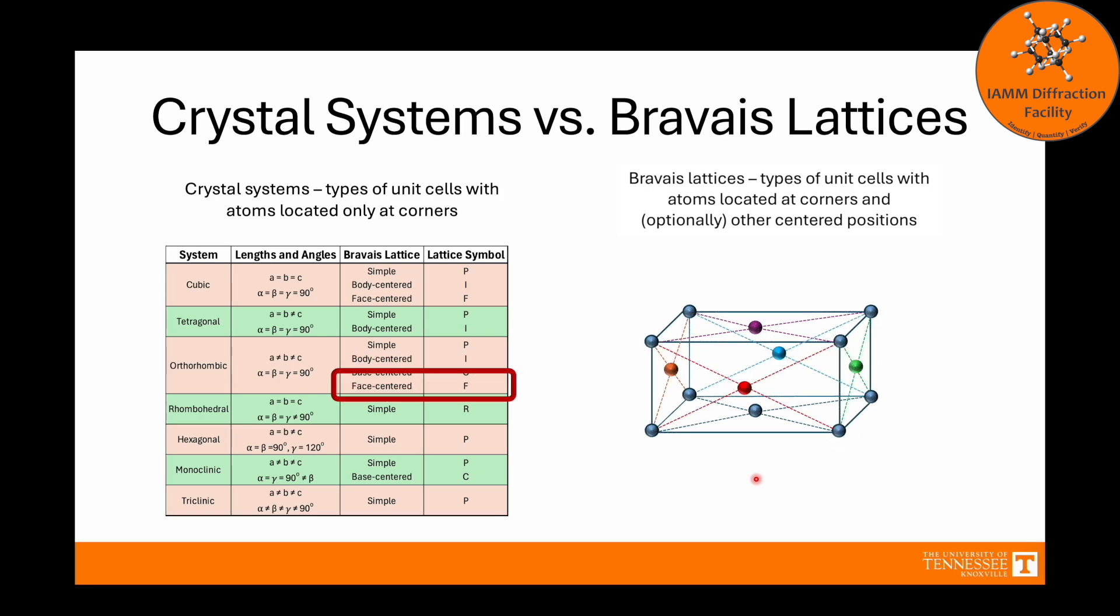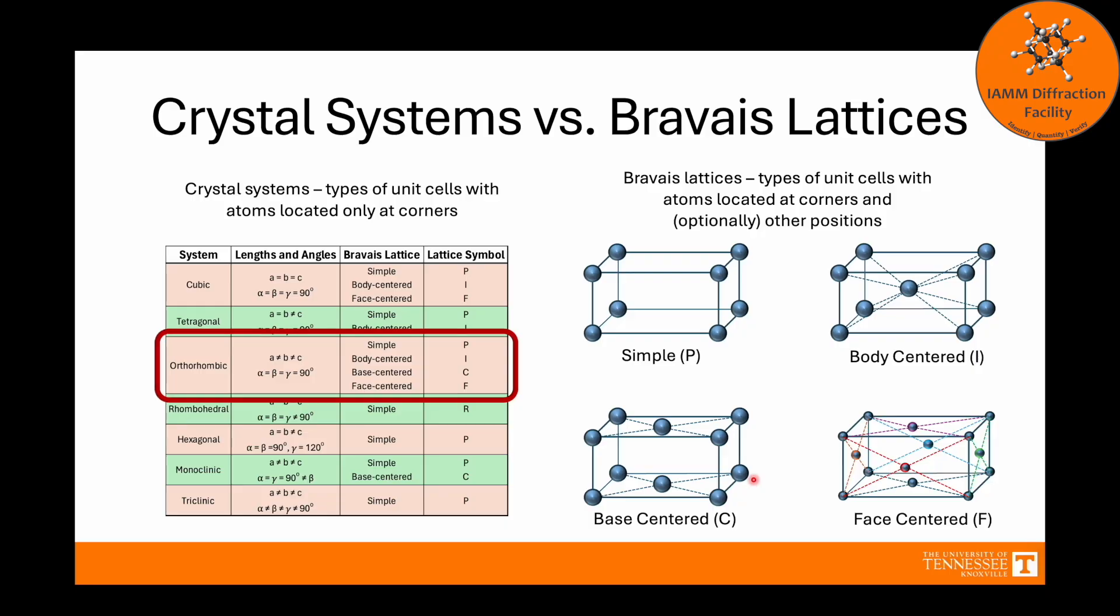Finally, we have face-centered, which has the lattice symbol F. In this one, there is an atom sitting in the middle of every face of the unit cell. Just to be clear, I made these atoms different colors not to represent that they are different chemical species, but just to help you see which atom is sitting in which face. If I made all these atoms blue with blue lines, it would be more difficult to see. Just keep in mind that these are all the same type of atom. And then here, we have an overall summary showing the four different types of Bravais lattices.